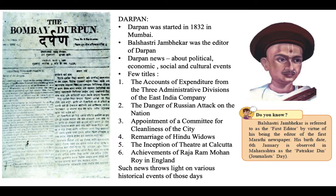The newspaper Darpan was started in 1832 in Mumbai. Bal Shastri Jambhekar was the editor of this paper. The news printed in Darpan can be reviewed to know about the political, economic, social, and cultural events of those times. This was the first Marathi newspaper, and Bal Shastri Jambhekar was its editor — a very important figure.